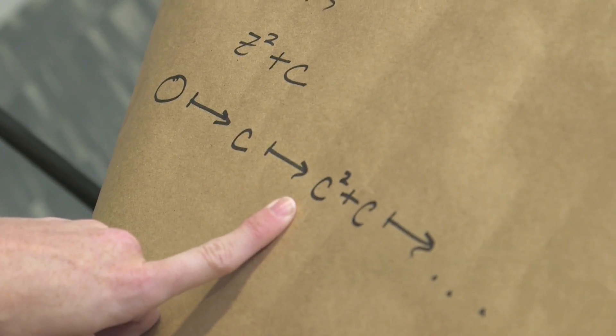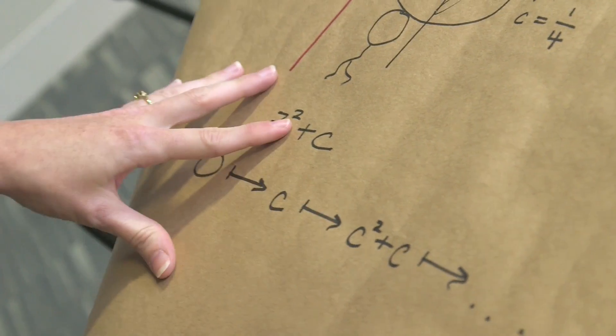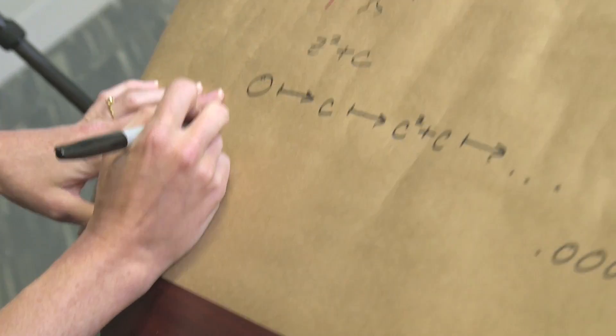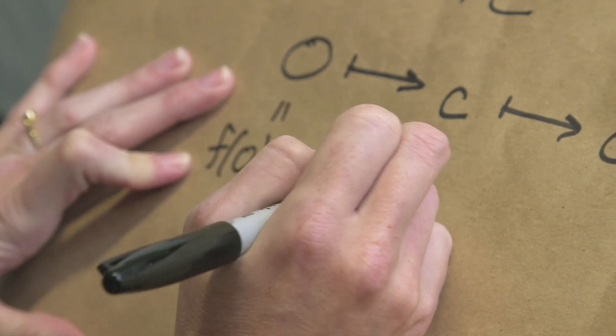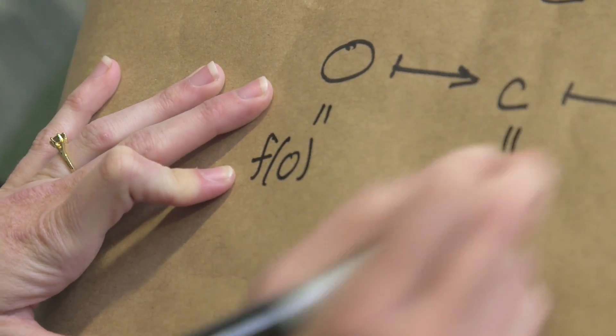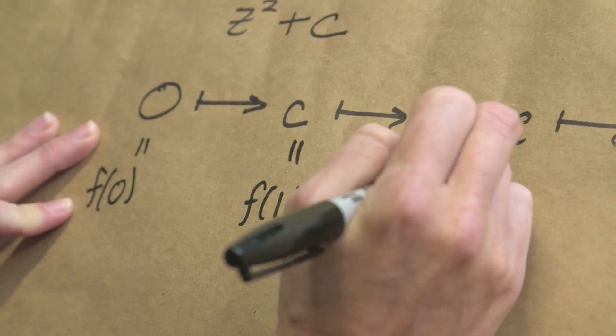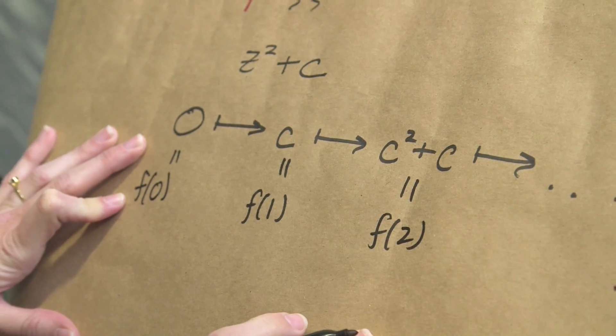Okay, so you mean this sequence here? Sorry, no this sequence. Okay, so imagine you're fixing some value of c and you're looking at this sequence, and let's think of this as a function. So maybe this is f of 0, and this is f of 1 because it's your first step. This is your f of 2 because it's your second step and so on.